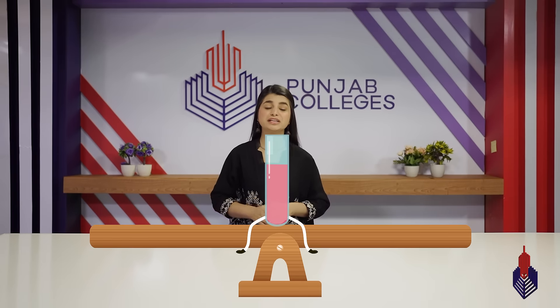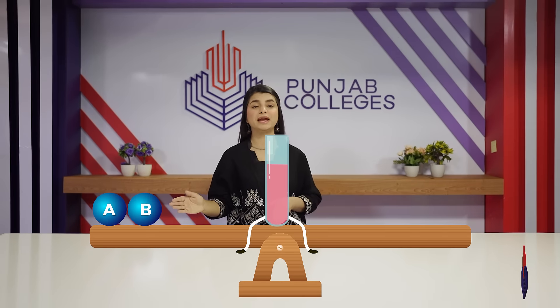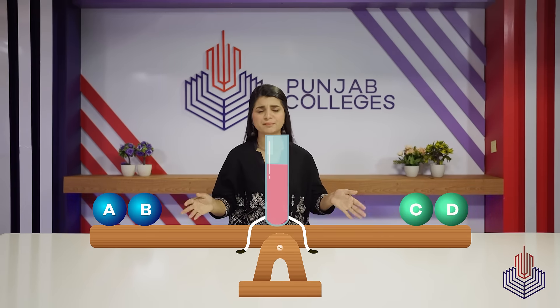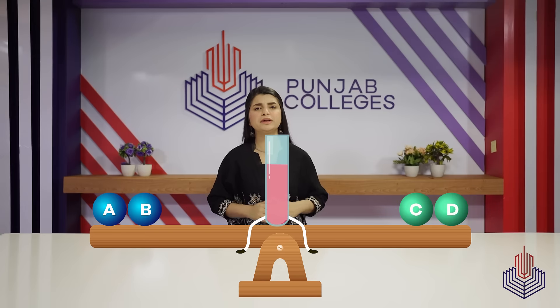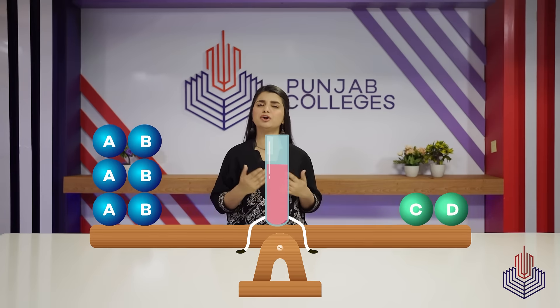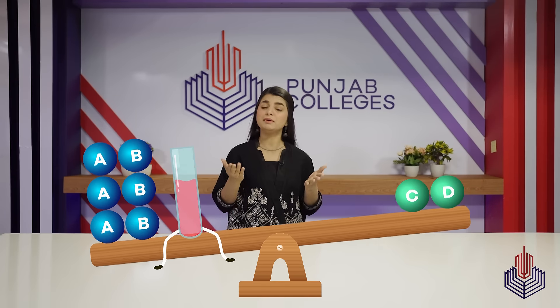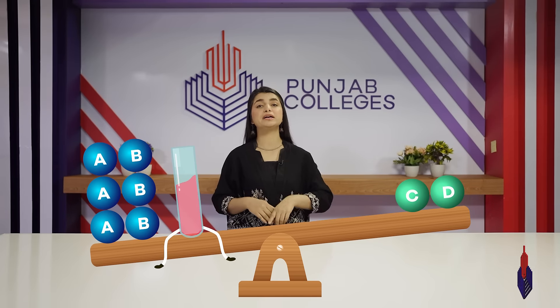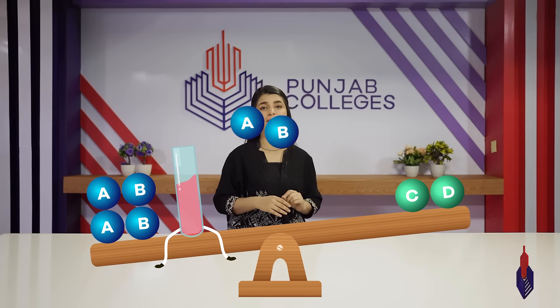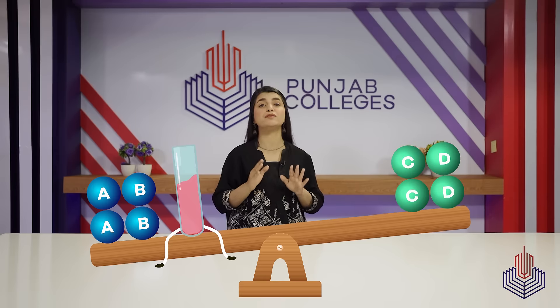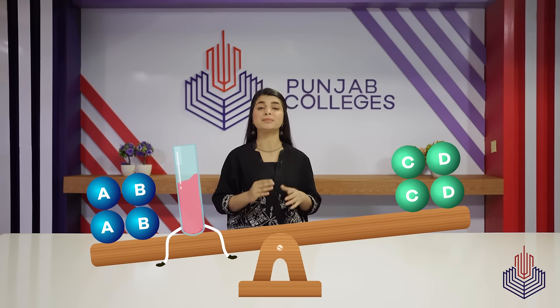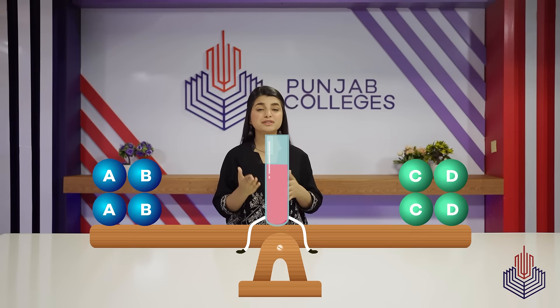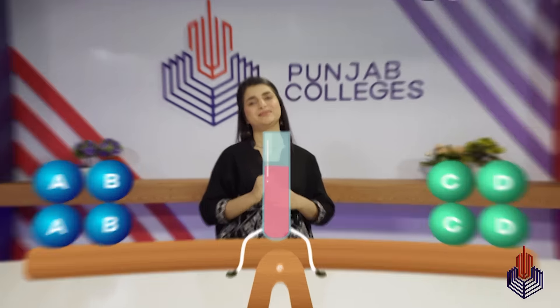We have a reversible reaction where A and B are reactants and C and D are products. If I increase the concentration of A and B, our equilibrium will be disturbed. This will make the reaction proceed toward C and D to restore the equilibrium, and in this way our equilibrium shifts to the right.